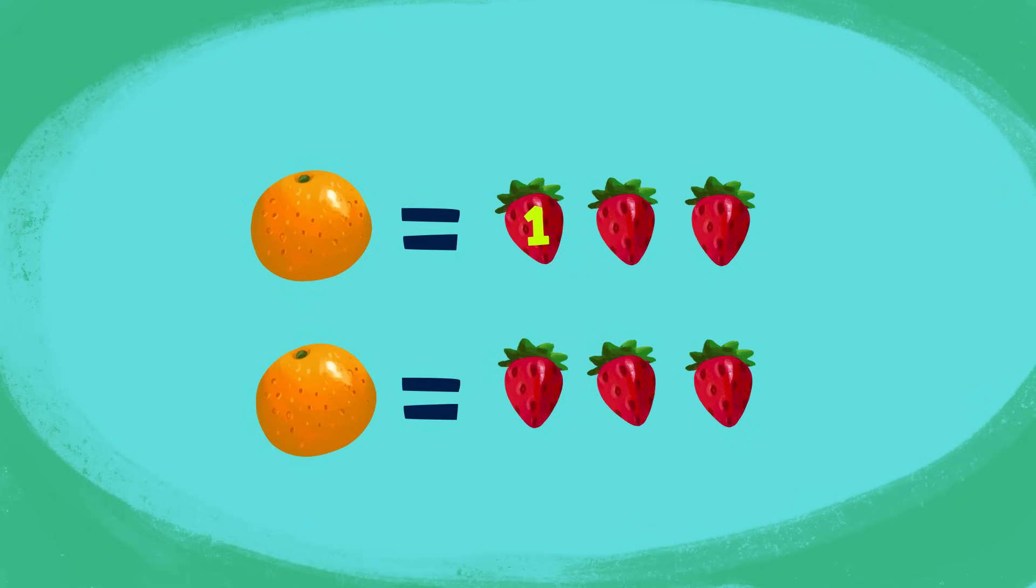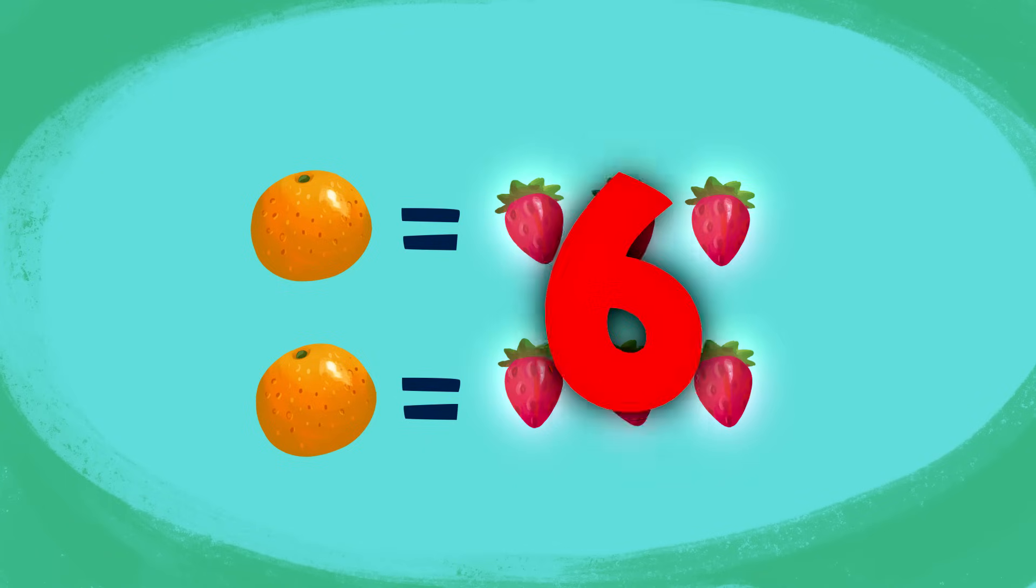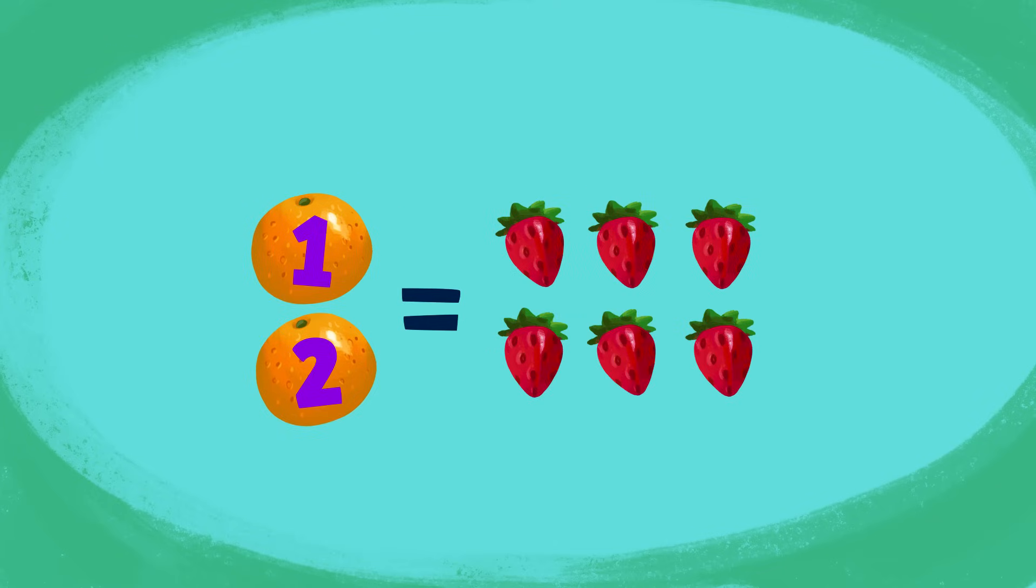One, two, three, four, five, six! That's right! If we add up all the strawberries, we have six strawberries! Two oranges can be swapped for six strawberries!